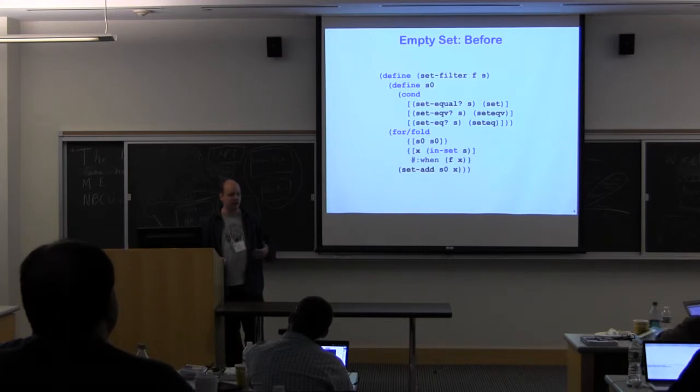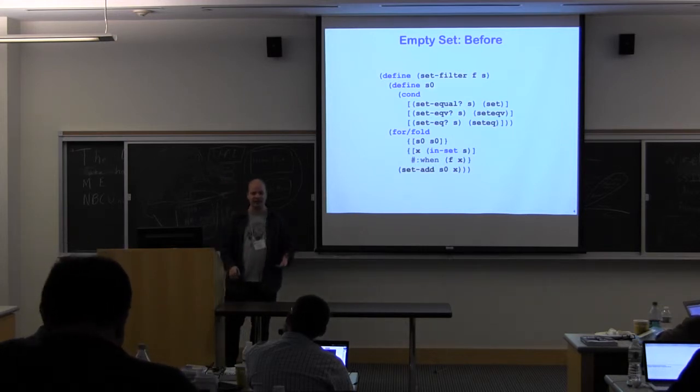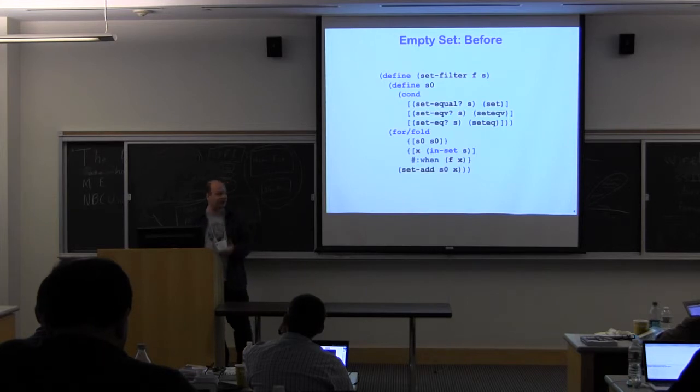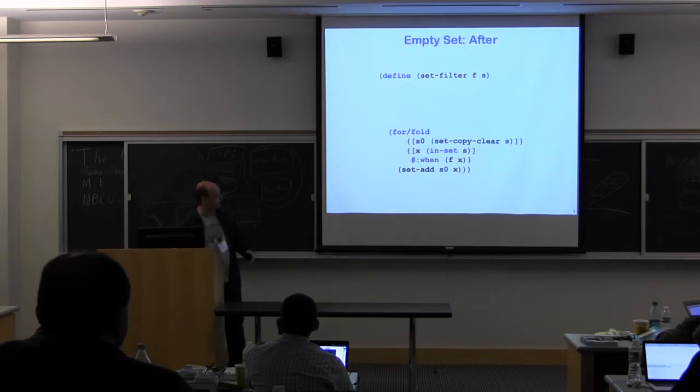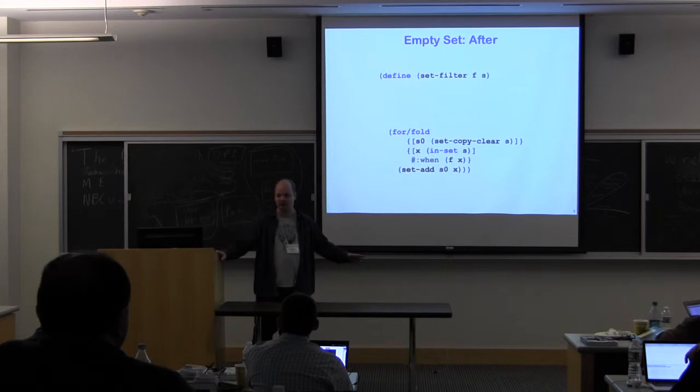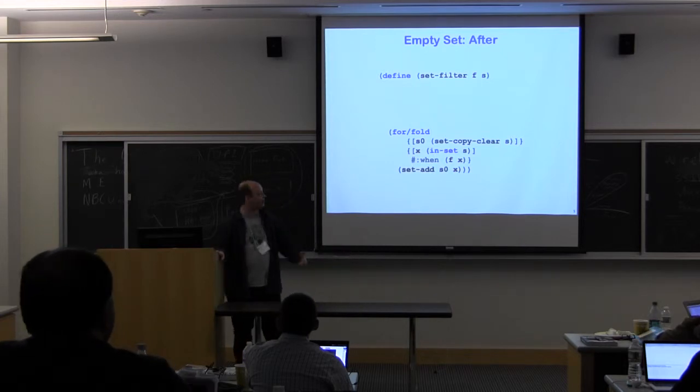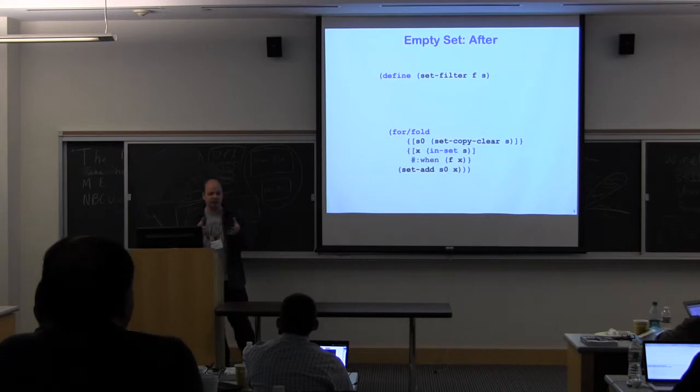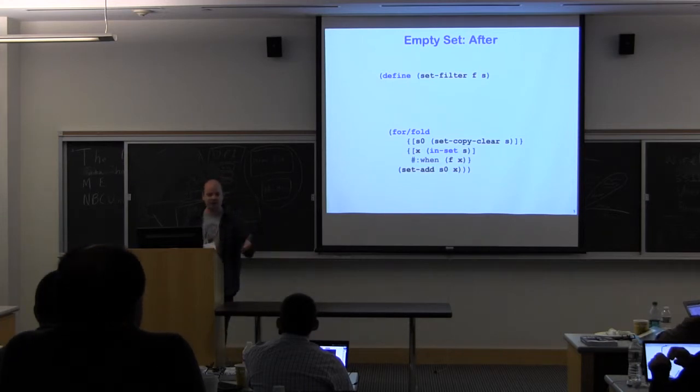And so in order to support generic use of sets, I've added another method on sets, so that instead of doing all of this to get the beginning of our fold for S0, we can just say set-copy-clear. A new copy of the set that's clear, it's got no elements, we just start from that, and it just does dispatch on the kind of set you give at S, ignores all the elements and creates the initial set, and you can go from there.